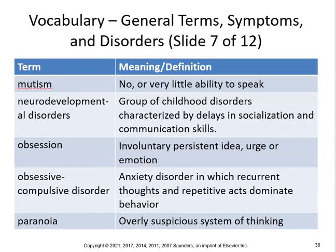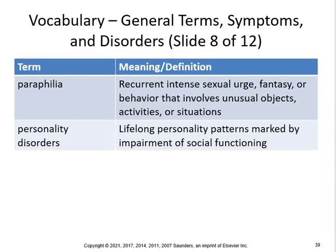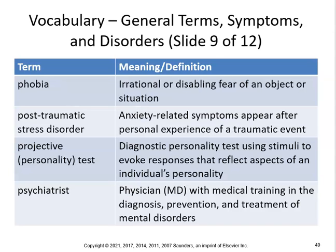Mutism is no or very little ability to speak. Neurodevelopmental disorders are a group of childhood disorders characterized by delays in socialization and communication. Obsession is an involuntary, persistent idea, urge, or emotion. OCD — obsessive-compulsive disorder — is an anxiety disorder in which recurrent thoughts and repetitive acts dominate behavior. Paranoia is an overly suspicious system of thinking. Paraphilia involves recurrent intense sexual urges, fantasies, or behaviors involving unusual objects, activities, or situations. Personality disorders are lifelong personality patterns marked by impairment of social functioning. Phobia is an irrational or disabling fear of an object or situation. PTSD — post-traumatic stress disorder — involves anxiety-related symptoms appearing after personal experience of a traumatic event; many soldiers will get PTSD.